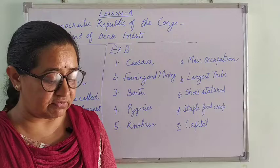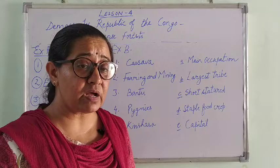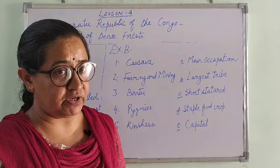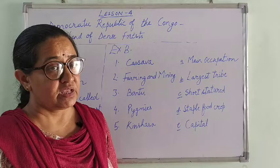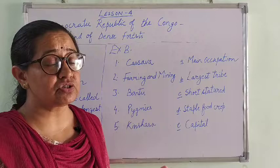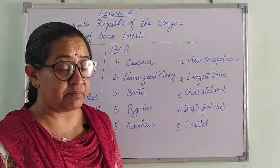We read about the people of this country — their main occupation is farming and mining, and the country is thinly populated. We also read about the transport system — it has a poor transport system and water is the main mode of transport. River Congo is used for transport and also for hydroelectricity, so water is an important resource here.